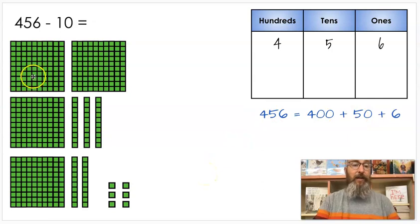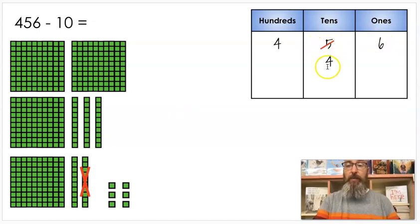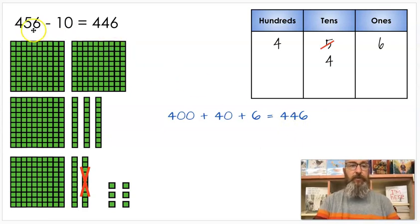If I take away a ten, I'm not going to cross out a hundred this time. So my hundreds are safe, just my tens. Now in the number 10 there's just 1 ten. So I'm just going to cross out one. Which means I still have 4 left. So now I have 4 hundreds which is 400, 4 tens which makes 40, and 6 ones which still makes 6. If I add those back together, 400 plus 40 plus 6, I get 446. So I'm just changing the tens, taking it down one.